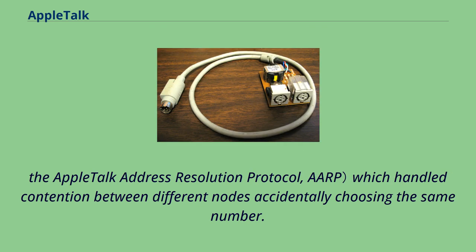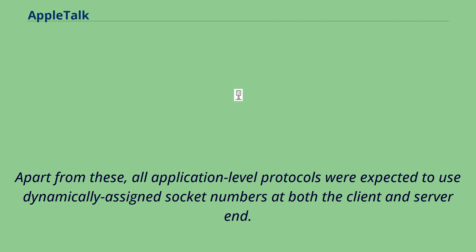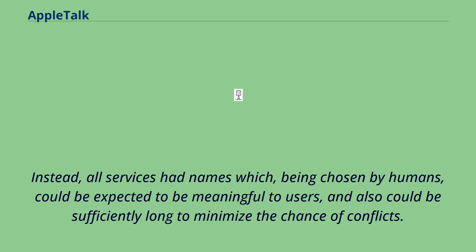Apart from reserved sockets, all application-level protocols were expected to use dynamically assigned socket numbers at both the client and server end. Because of this dynamism, users could not be expected to access services by specifying their address. Instead, all services had names which, being chosen by humans, could be expected to be meaningful to users and could be sufficiently long to minimize the chance of conflicts.